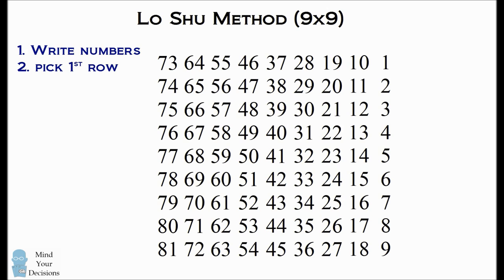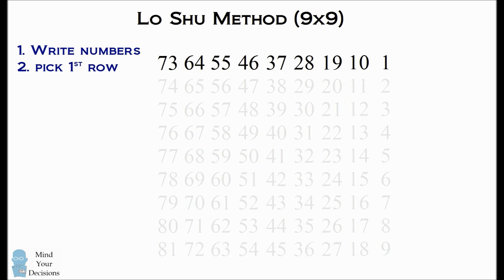Now we will focus on the numbers only in the first row. There are a total of 9 numbers here. And now we can use the Lo Shu technique to create a 3 by 3 magic square from these 9 numbers.